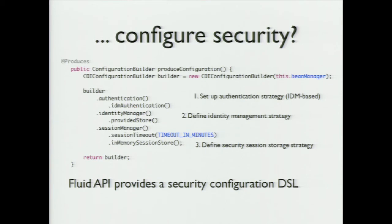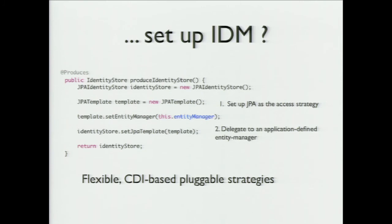PicketLink provides a way that once you authenticate, it retains information about the fact that you're authenticated and gives you a token. You can use that token to avoid logging in every time you make a request. This information is stored in the session storage — not your HTTP session, but a separate mechanism that allows an in-memory store or a data grid. The identity store itself — the tables where you store user, group, and role information — is again configurable through another CDI producer bean.